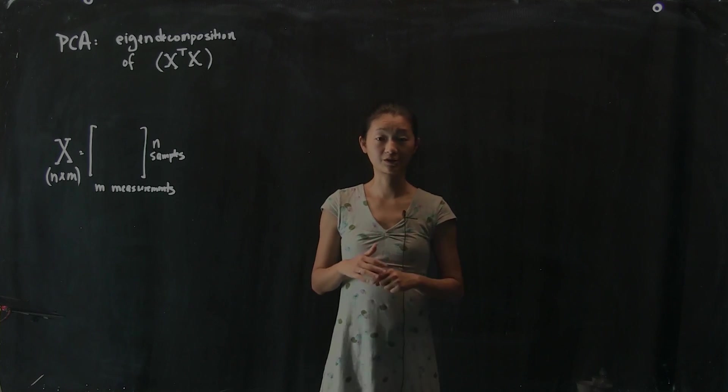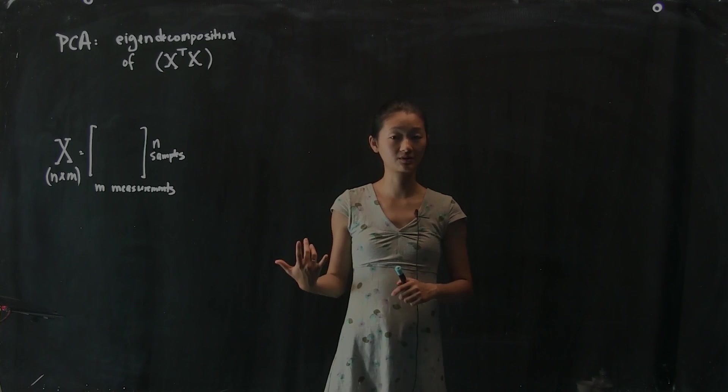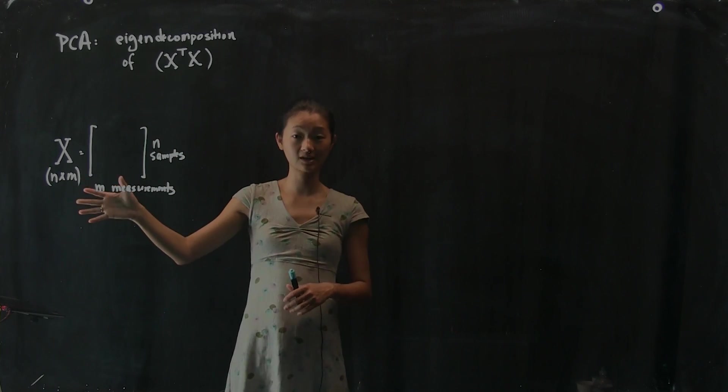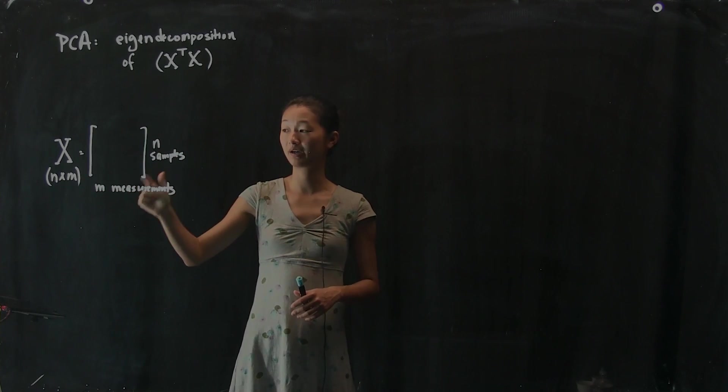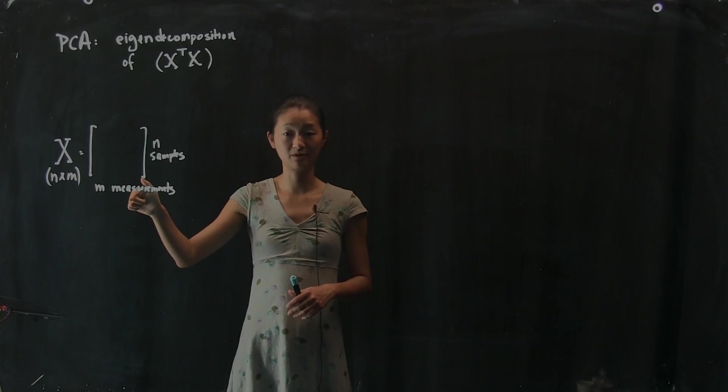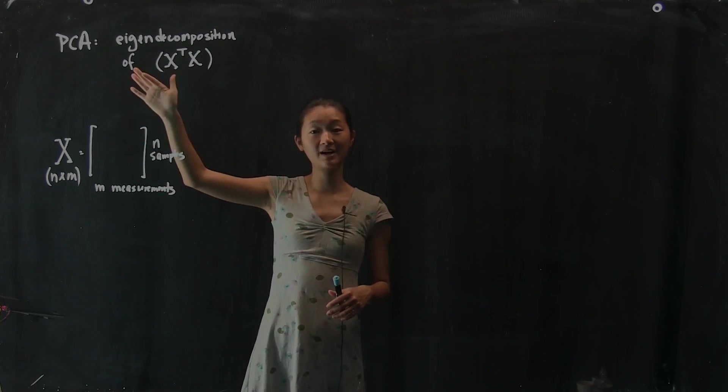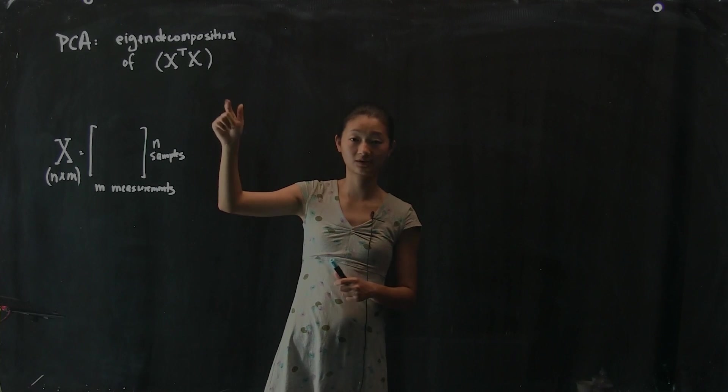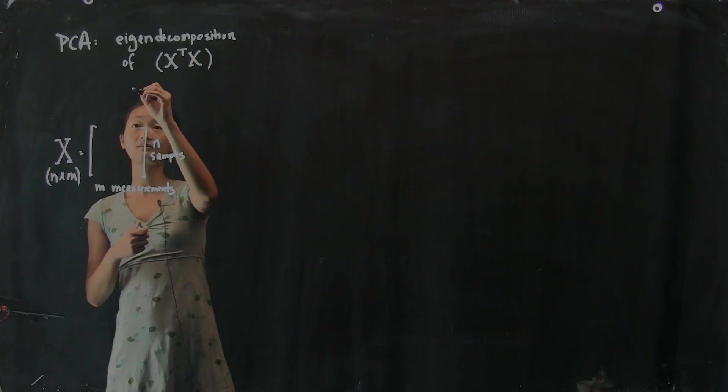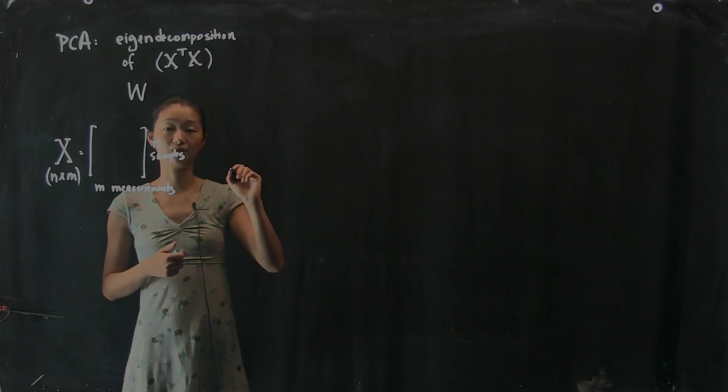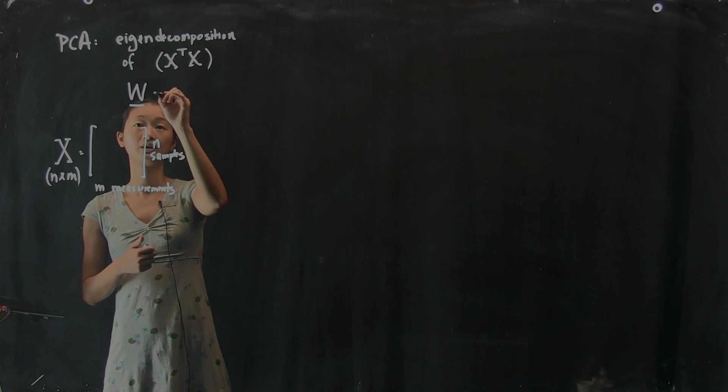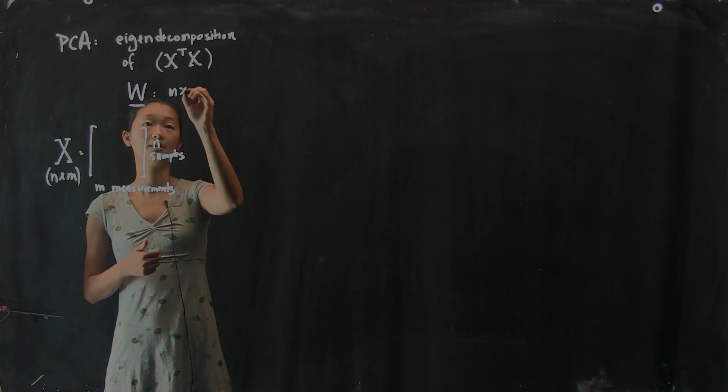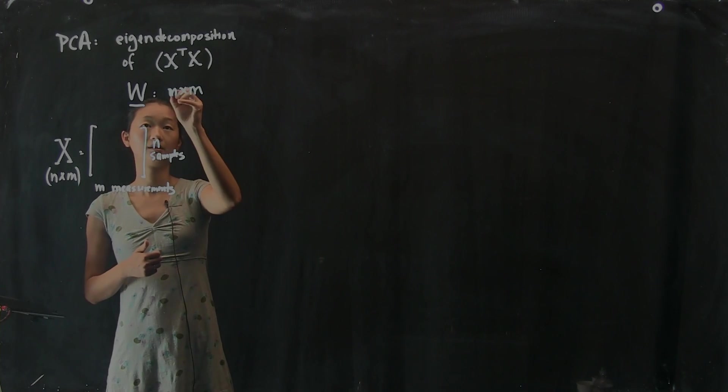We're going to continue our conversation about principal components analysis. We left off last time with this data matrix X that is n by m, where n is the number of samples and m is the number of measurements. Principal components analysis is defined as the eigendecomposition of the covariance matrix X transpose times X, which gets you this W matrix, which are my loadings. This is an m by m matrix.